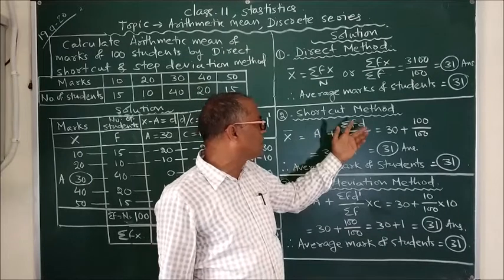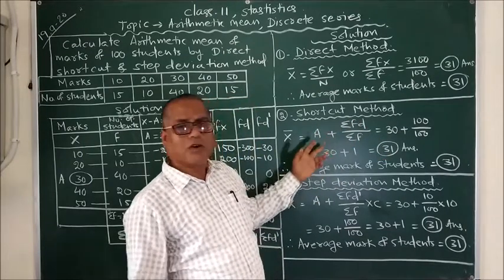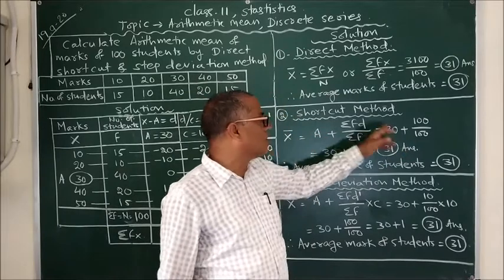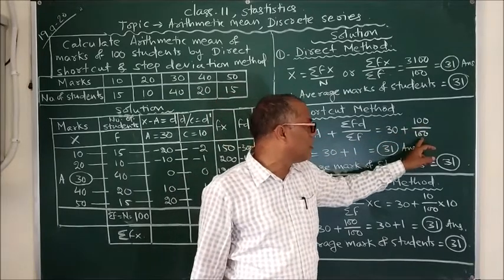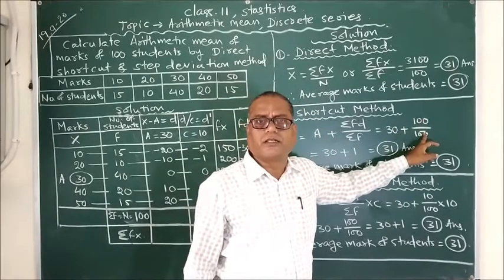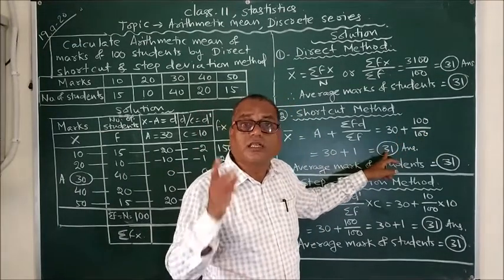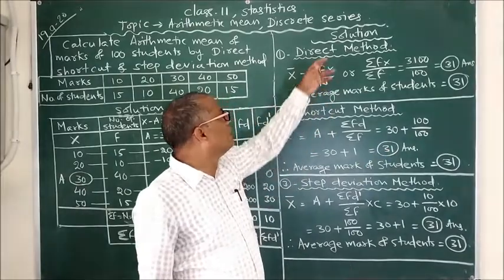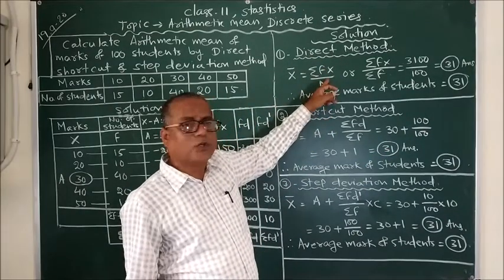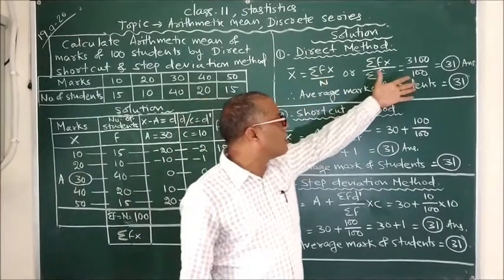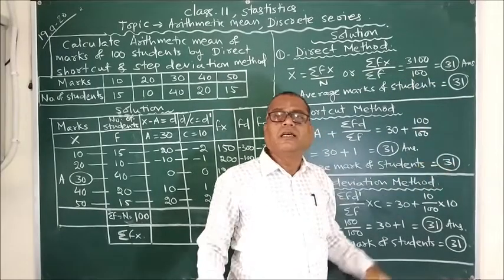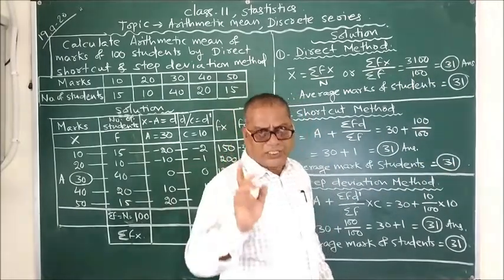When we replace the aggregates with values, the equation became x bar equals 30 plus 100 upon 100. 100 upon 100 is 1, hence we got 30 plus 1 and the answer is 31. So in direct and shortcut method we used two different formulas but ultimately found the same answer.